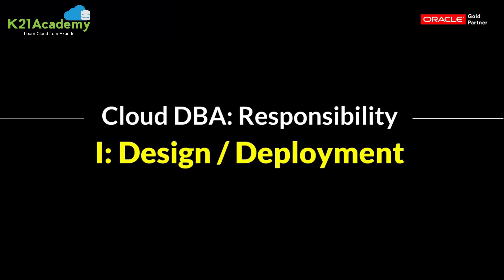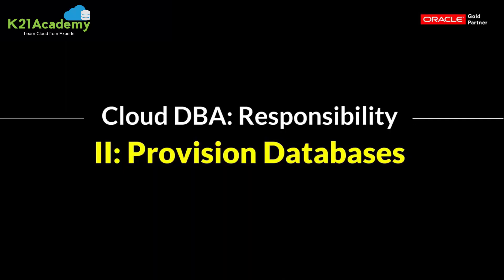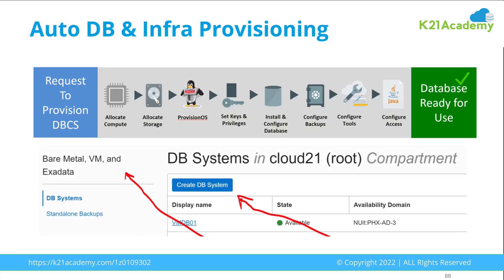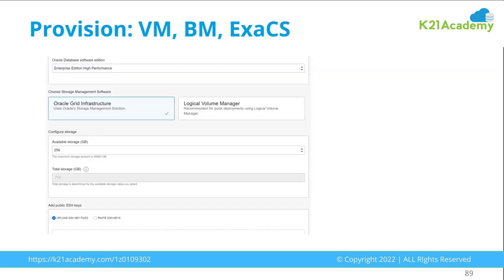Once you have designed your database on cloud, the next task is provisioning, typically done by a junior DBA or a senior DBA. You should know the prerequisites for setting up the database — whether it's an autonomous database, a user-managed or automated database, or a database on compute. Be familiar with prerequisites like network connectivity, the four different editions in Oracle Public Cloud, whether you want grid infrastructure or logical volume, and SSH keys and other options across autonomous, Exadata Cloud Service, virtual machine, or bare metal database services.